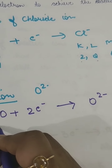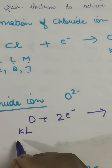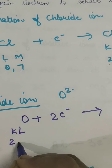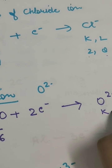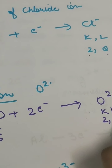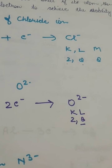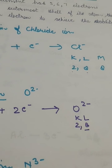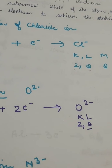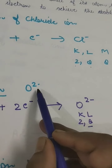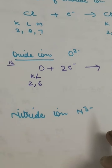The electronic configuration of oxygen was K and L, with 2 and 6. After accepting 2 electrons it will become 2 and 8, so the octet is complete and it has gained the electronic configuration of neon. Now it is stable - that is why it will become a negative ion, which we call as anion.